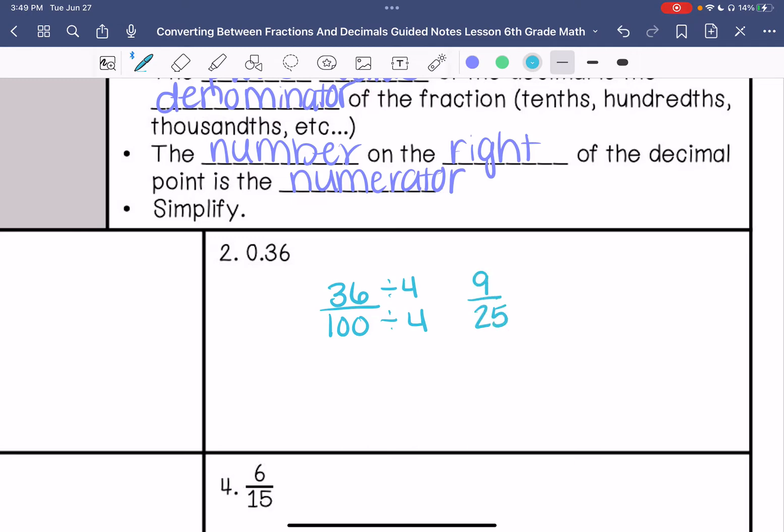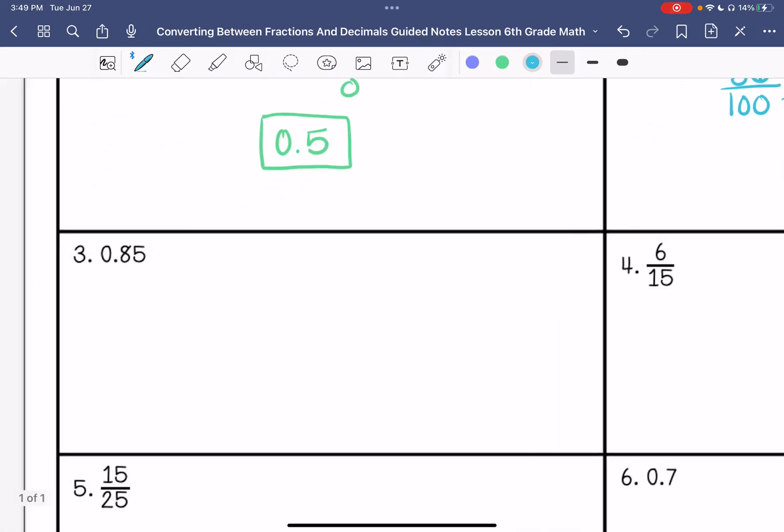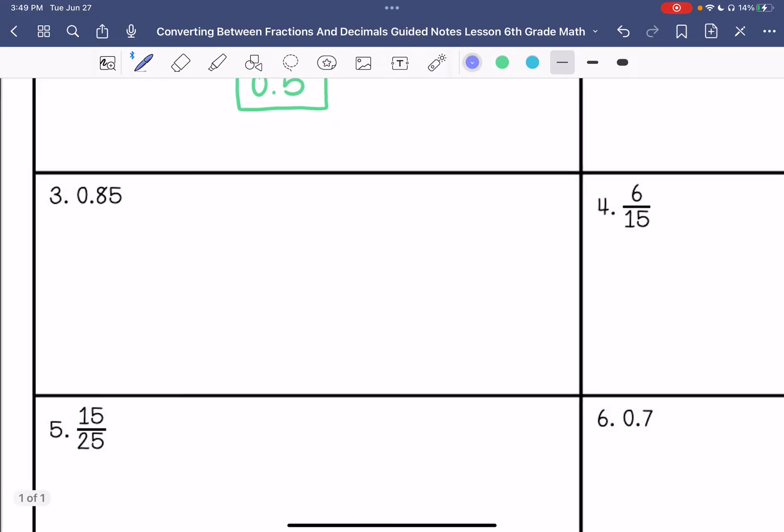This is 0.85 hundredths. Simplify. 17 twentieths.